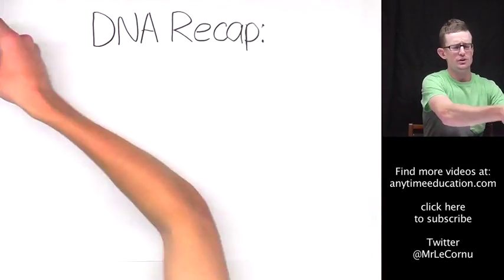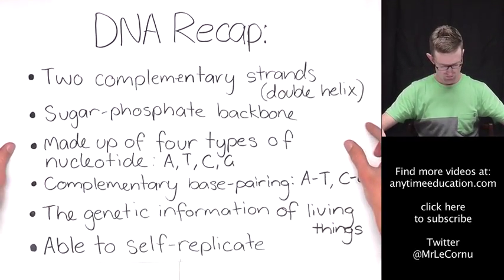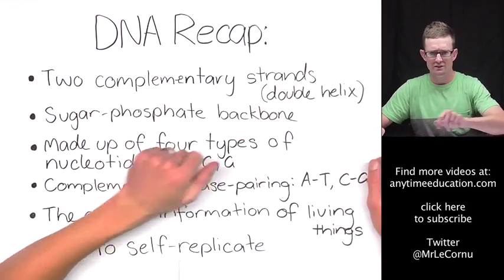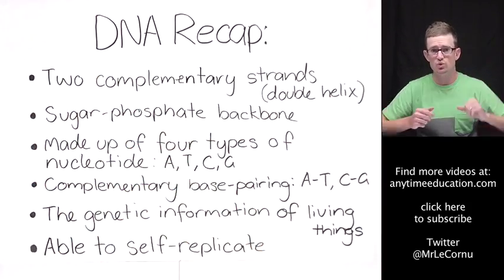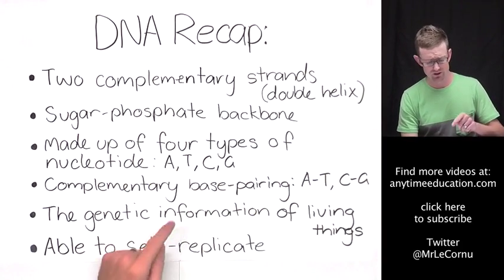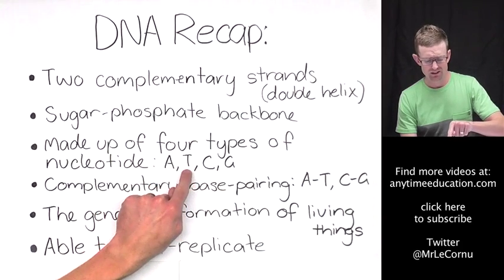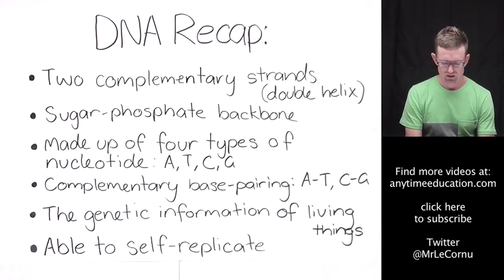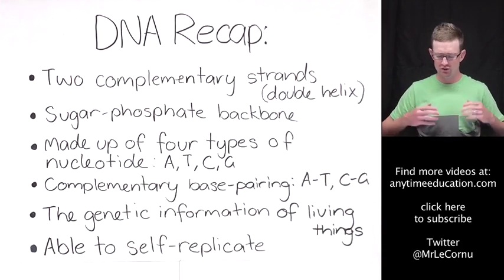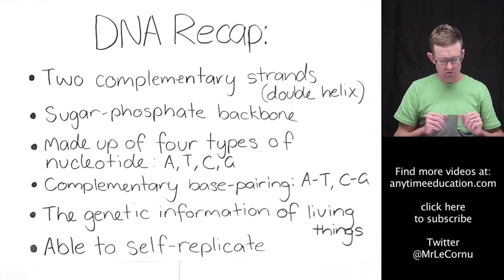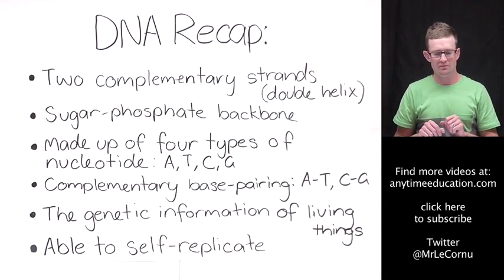In the DNA video we went through the main points and features of our DNA molecule. First of all, DNA is two complementary strands — we call it a double helix, like a ladder which has been twisted up. It has a sugar phosphate backbone and is made up of four types of nucleotide: A, T, C and G. We have complementary base pairing in DNA — A always pairs with T, and C always pairs with G. DNA is the genetic information of living things, and DNA is able to self-replicate.